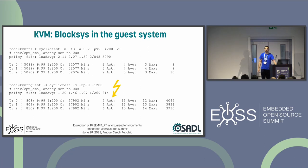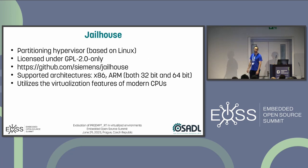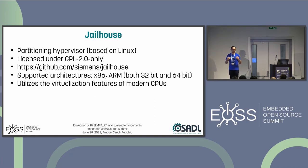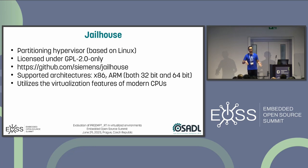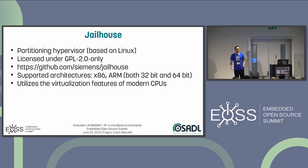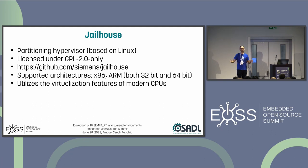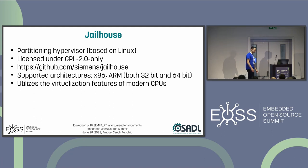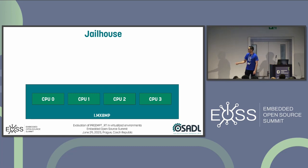The next technology to look at for isolation is Jailhouse, a partitioning hypervisor. It's GPLv2, originally written and still maintained by Siemens, and supports x86 and ARM. Like KVM, it makes use of the virtualization features of modern CPUs, but it performs a real hard partitioning of the system. The uploaded slide version has additional detail on what Jailhouse can and cannot do.